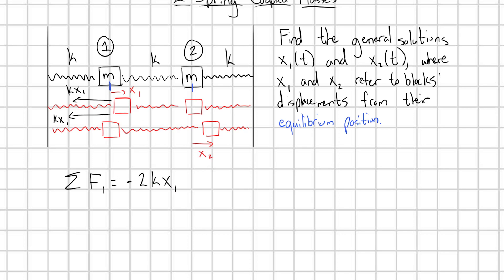Why is there a minus sign? Remember, for a positive displacement to the right, I had a negative force to the left — there's this opposite relationship. This is why I always define my displacements to the right, so I can see when I have negative forces pointing to the left and immediately write them as negative. Just make your displacements positive to avoid that headache. We've now collected all the forces acting on block one in this top picture from the springs to the left and right of it.